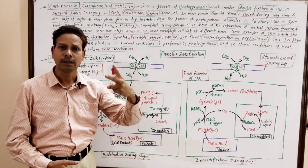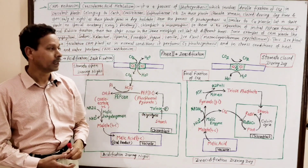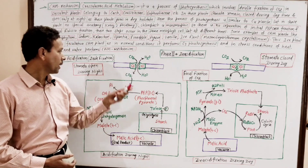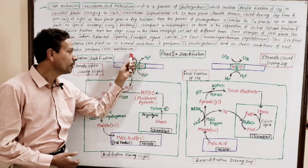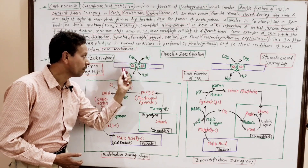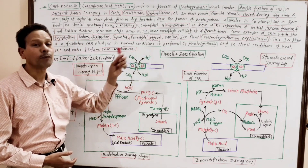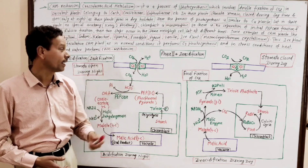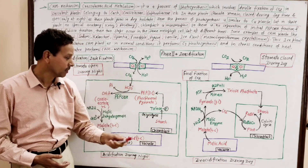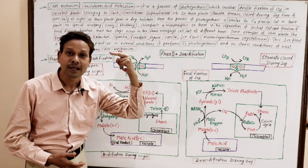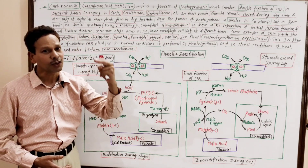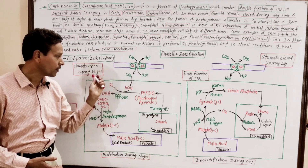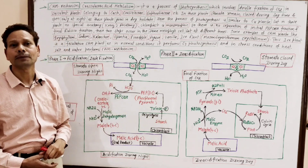In CAM plants, the initial fixation of CO2 is carried by PEP carboxylase enzyme and it occurs during the night when stomata open. At this time there is an exchange of CO2 and water, which takes place during nighttime in the absence of light — that's why it is called dark fixation. In this process, the end product is malic acid, so it is acidification.